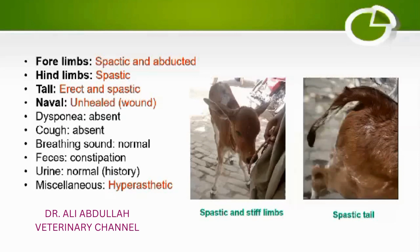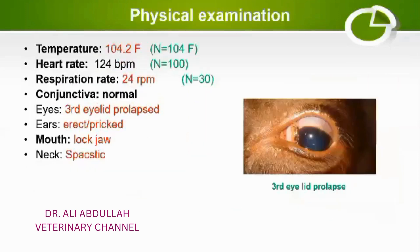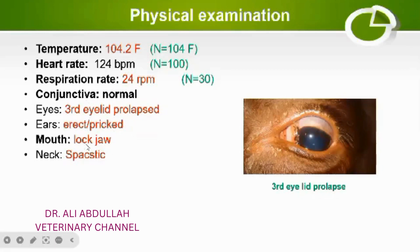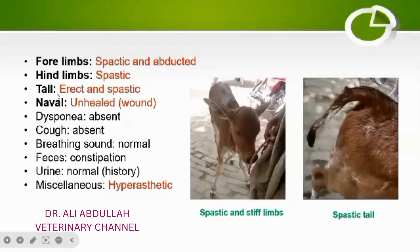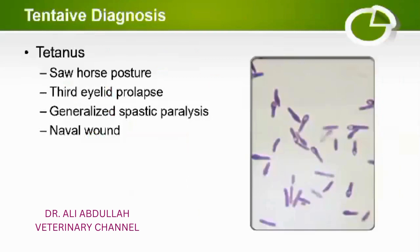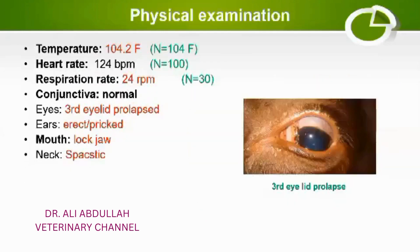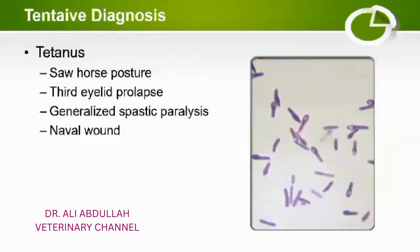All the signs explained in this case — erect ears, lockjaw, spastic neck, spastic limbs, erect tail, and hyperesthesia — are related to a nervous disorder. That nervous disorder is tetanus. I tentatively diagnosed this calf for tetanus because all signs present were indicative of tetanus, and the sawhorse posture is a very pathognomonic posture for tetanus.